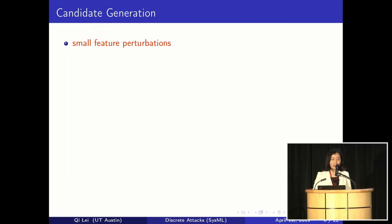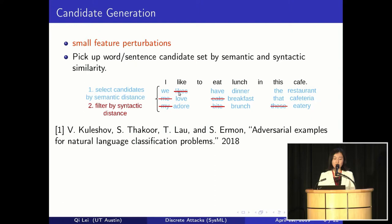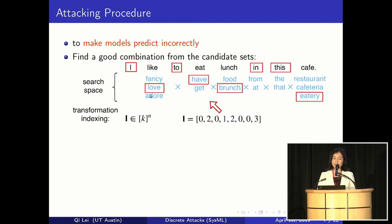Now let's look at how we can actually generate adversarial attacks. First, we want to find possible candidates to replace words so that it meets our requirement of small feature perturbations. We use a method proposed by Kuleshev — we can generate candidates for each word based on their semantic and syntactic distance. Specifically, we look at each word and generate synonyms for all of them, but some may not fit in the context, so we use a language model to filter out those words. For each word, we may have several possible candidates that meet our requirement.